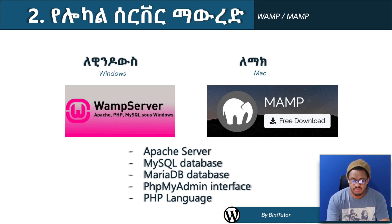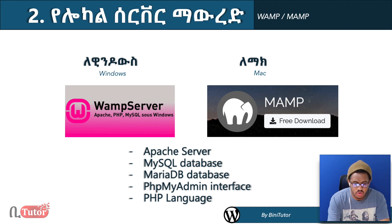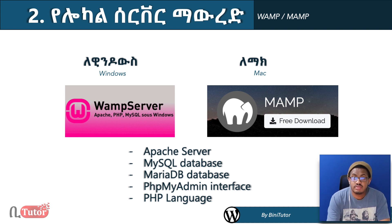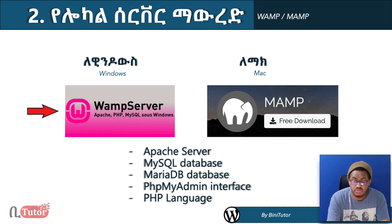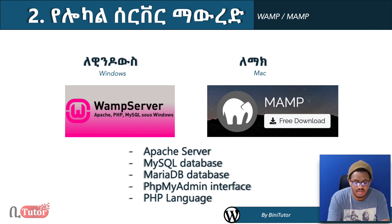In this tutorial we cover WordPress on a local server. For a Windows operating system, the local server software is called WAMP Server, and for Mac computers it is called MAMP.